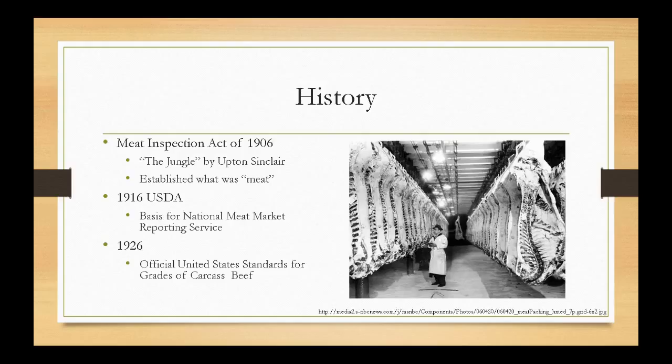In 1916, the USDA recognized that this heterogeneous group of carcasses needed to become more homogenous, so they decided to make a grading system. The USDA established the basis for what was the National Meat Market Reporting Service. This led up to the official United States standards for the grades of beef carcasses, established in 1926.